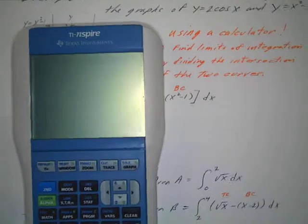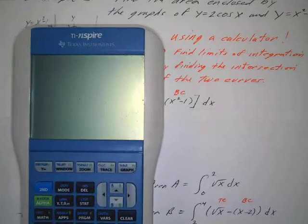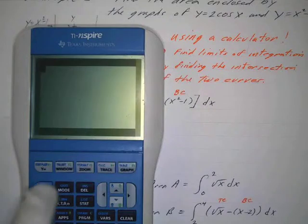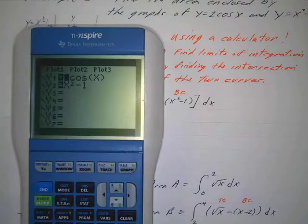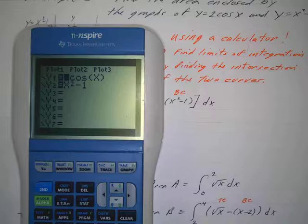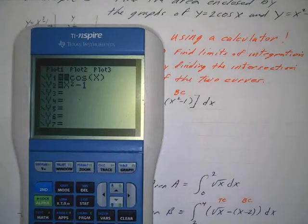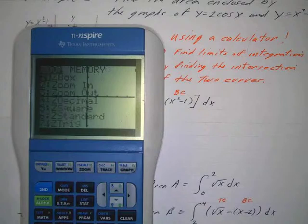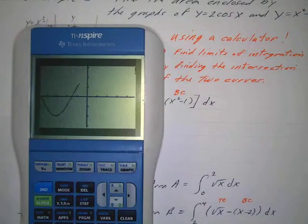Let's get out our trusty calculators and turn this guy on. I'll go to y1 and put 2 cosine x on the first, and y1 is the top curve. And then x squared minus one, the bottom curve. So I'm gonna graph this and go to zoom.